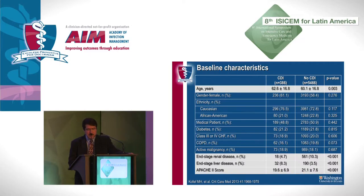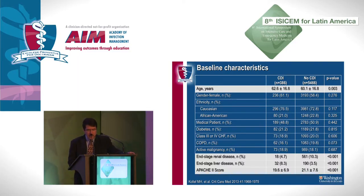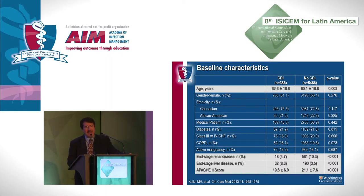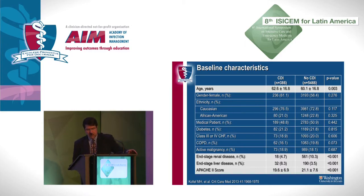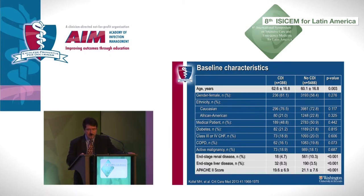When we compared these patients to those who had no C. diff infection, there were some differences. The C. diff patients were a little older, but only about two and a half years. Patients who had C. difficile infection were less likely to have end-stage renal disease, but more likely to have end-stage liver disease — which became important because it was a predictor of mortality. The Apache 2 scores were somewhat lower, so it appears this infection was occurring more often in patients with somewhat lower severity of illness.